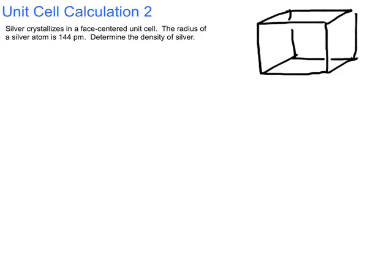Welcome everybody to a second video on doing some unit cell calculations. You can see the problem we're going to tackle there in the top left. Silver crystallizes in a face-centered unit cell. The radius of a silver atom is 144 picometers. We're going to determine the density of silver.